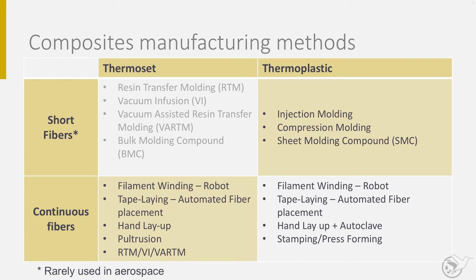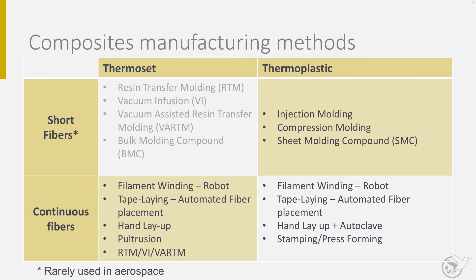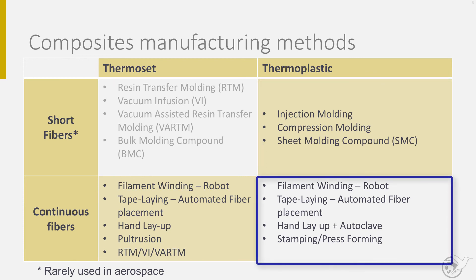For thermoplastic composites, the manufacturing methods include injection molding involving short fibers. This process can be fast because of the rapid heating and cooling of the polymer. During injection, the fibers drift with the polymer flow. For continuous fibers, often a flat laminate is used as a semi-finished product. By heating the laminate, the polymer becomes soft again and, for example, bending or press forming can be used to shape the product.